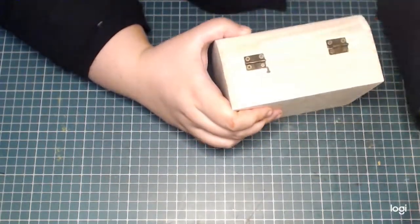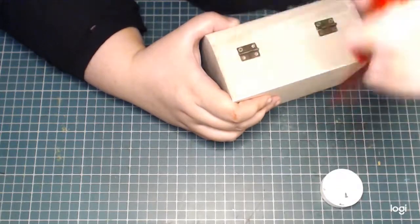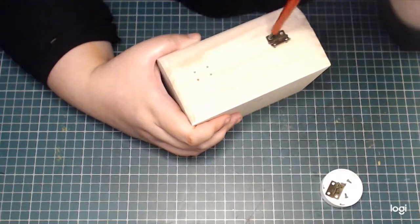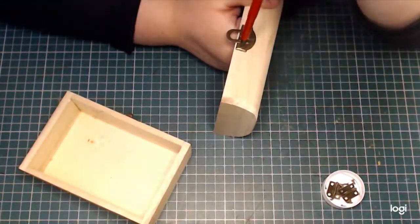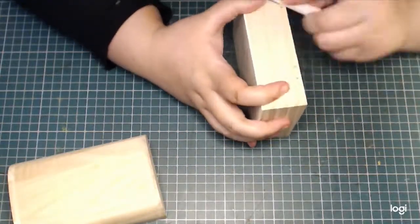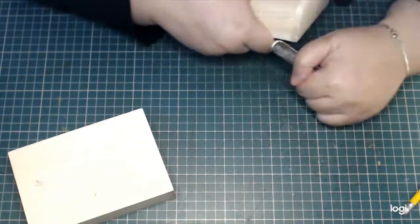Of course to be able to work properly on the box I'm going to have to take off the hinges and the closure. And I'm also sanding the edges and any rough bits that may have been left over from the fabrication process.